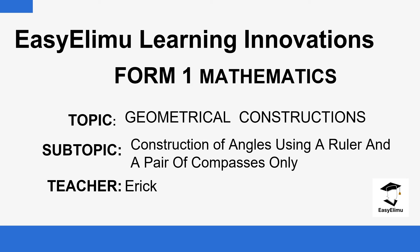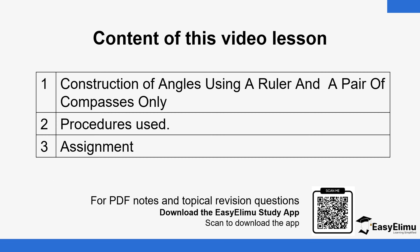We have mainly the procedures and how to do it. We're going to do a demonstration, and I really hope that by the end of the lesson you'll be able to construct an angle using a ruler and a pair of compasses only. At the end of this lesson we'll be having some questions in the form of an assignment to help you practice and check your understanding.